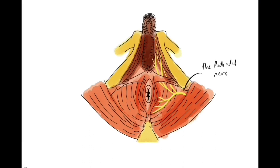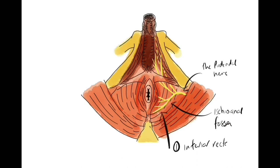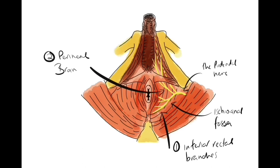Here we can see the pudendal nerve emerging with a number of branches that emerge off it in the ischioanal fossa. The first branch is the inferior rectal branch, most easily seen. It goes to the external anal sphincter and the skin around the anal triangle.